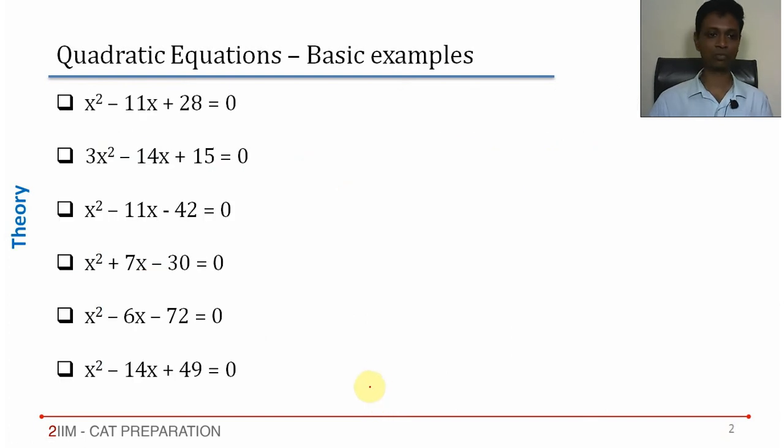Let us get some practice on this. x² - 11x + 28 = 0. We have to split -11 to get 28. Remember, we have to split -11 to get a positive product, so both terms should be negative.